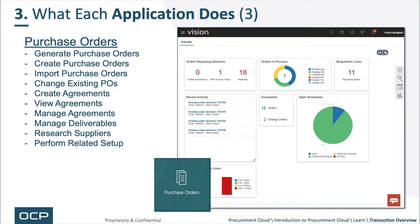Next, purchase orders — very similar to purchase agreements. You can generate POs from another application, create purchase orders, import purchase orders, change existing ones, and create, view, and manage agreements — so CPAs and DPAs. Again, manage deliverables, research suppliers, and perform related setup, just as in the prior step.